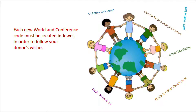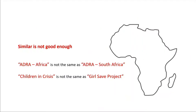Each world and conference code that you don't already have in JEWEL must be created in JEWEL, so that you can map that donation in accordance with denominational policy. All of those world and conference codes have assigned names and numbers, and they're not interchangeable — similar is not good enough. ADRA Africa is not the same as ADRA South Africa. Children in Crisis is not the same as Girls Save Project or Africa Orphans.